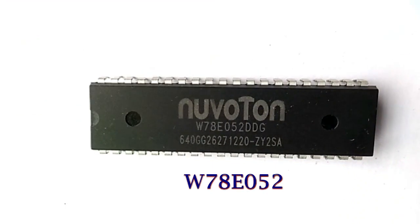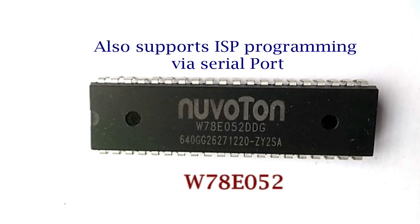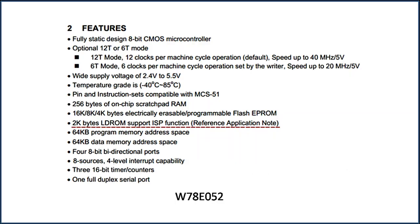Next, Nuvoton's W78E052. This IC is similar in all respects when compared to NXP's P89V51RD2. This IC also supports ISP programming via COM port, as it has an inbuilt bootloader. Additionally, this IC has a wide operating voltage range from 2.4V to 5.5V, which can be useful in battery-powered applications.